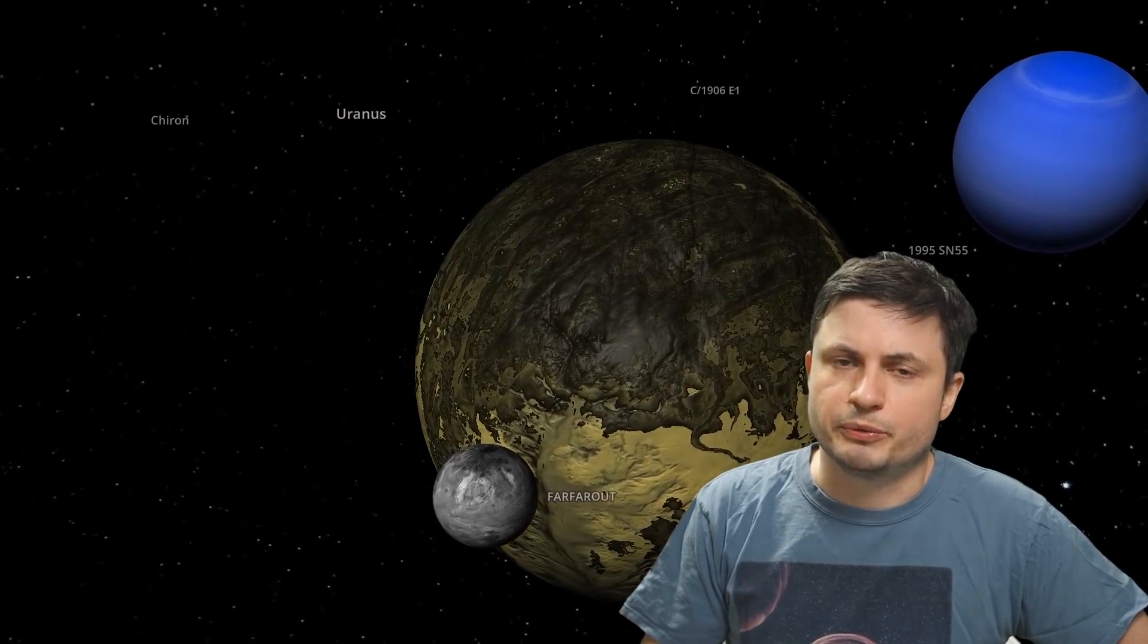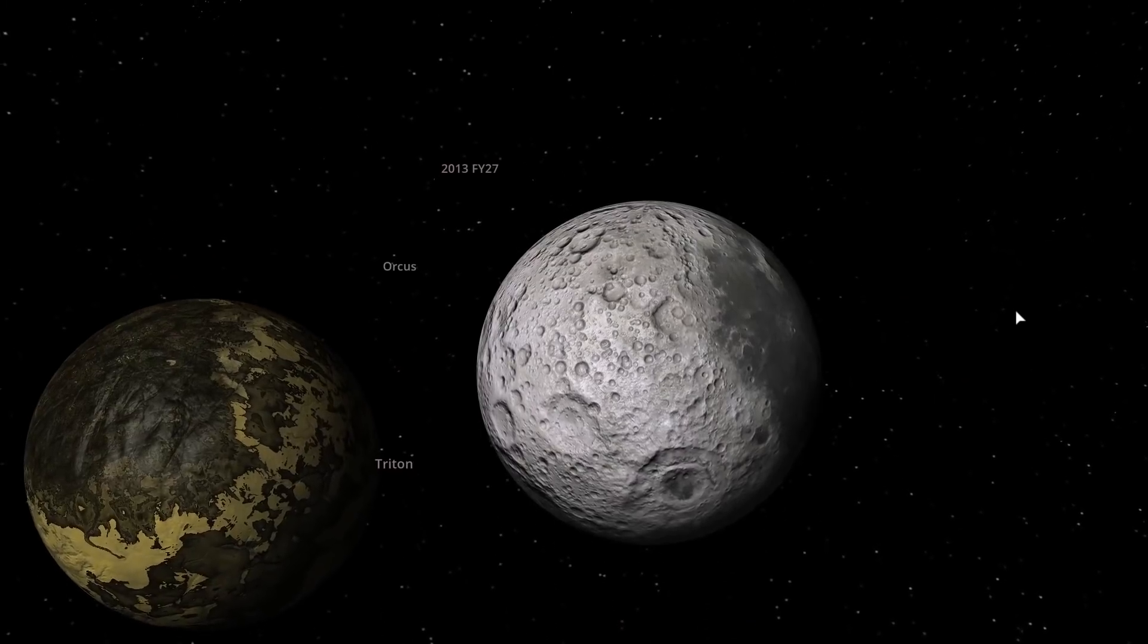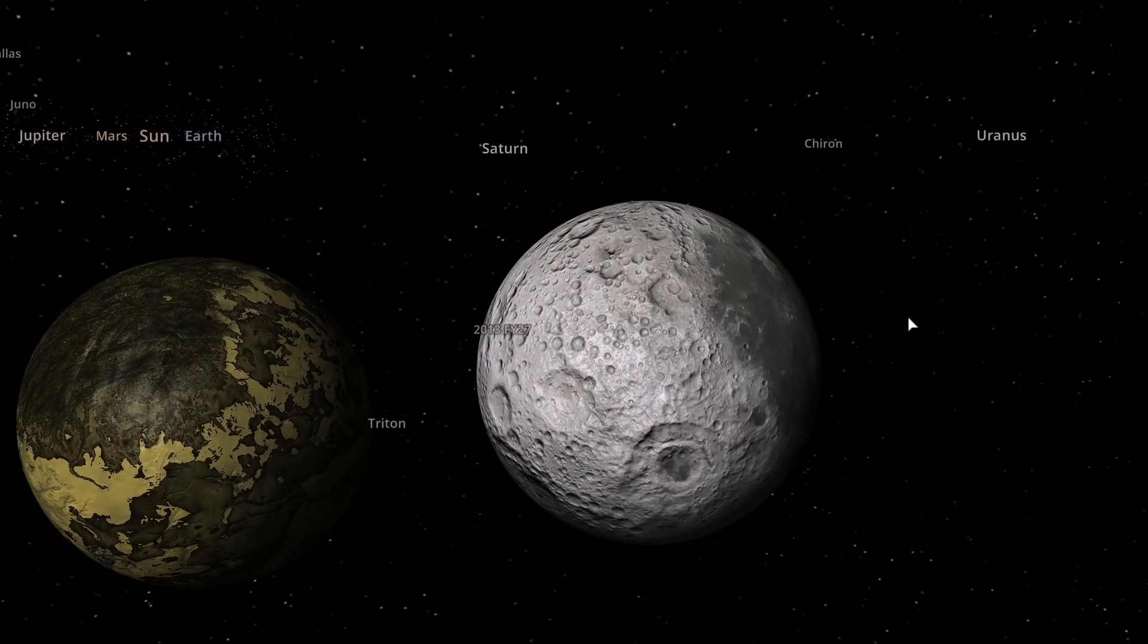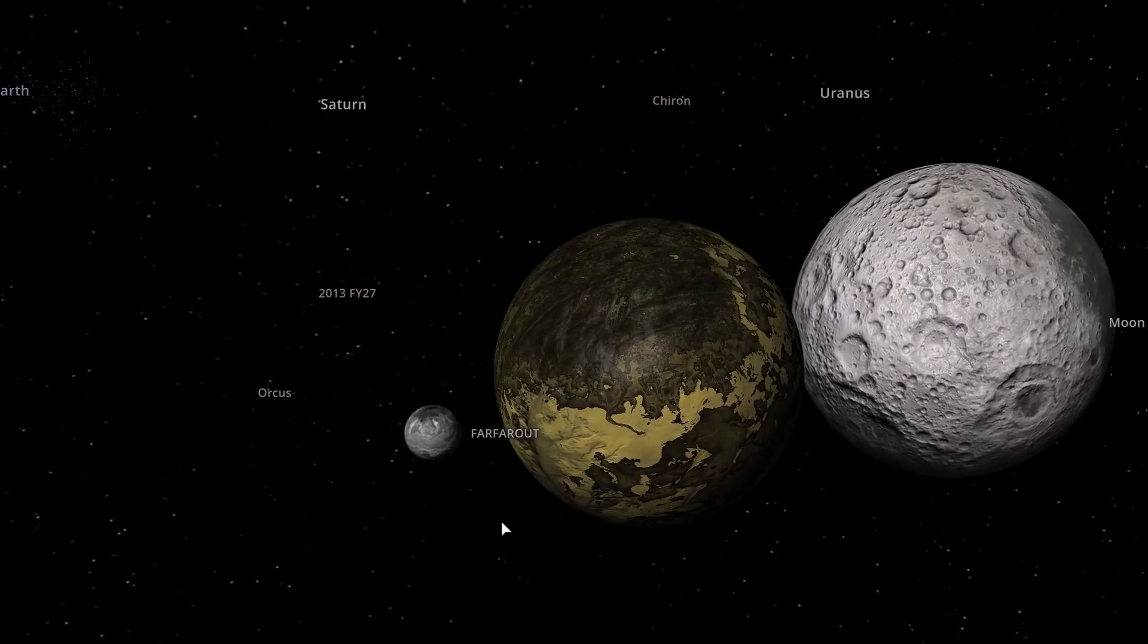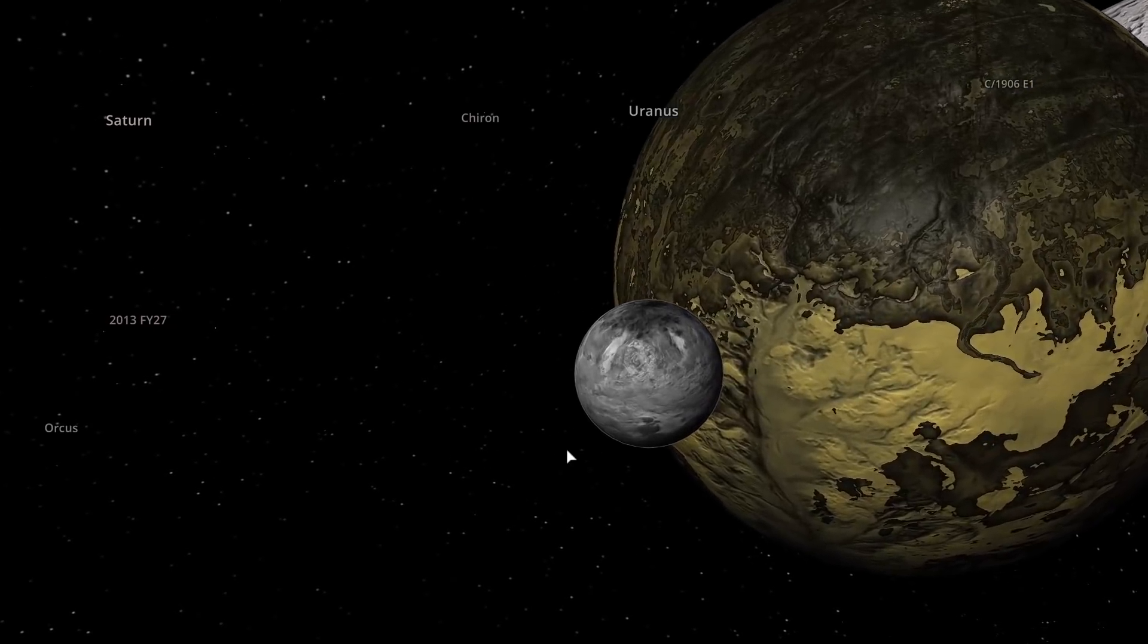There's also a major difference between them and the difference is of course the size and the mass. Here's how Triton compares to our own moon but here's how Triton compares to this newly discovered object far far out. This is only about 400 kilometers in diameter.